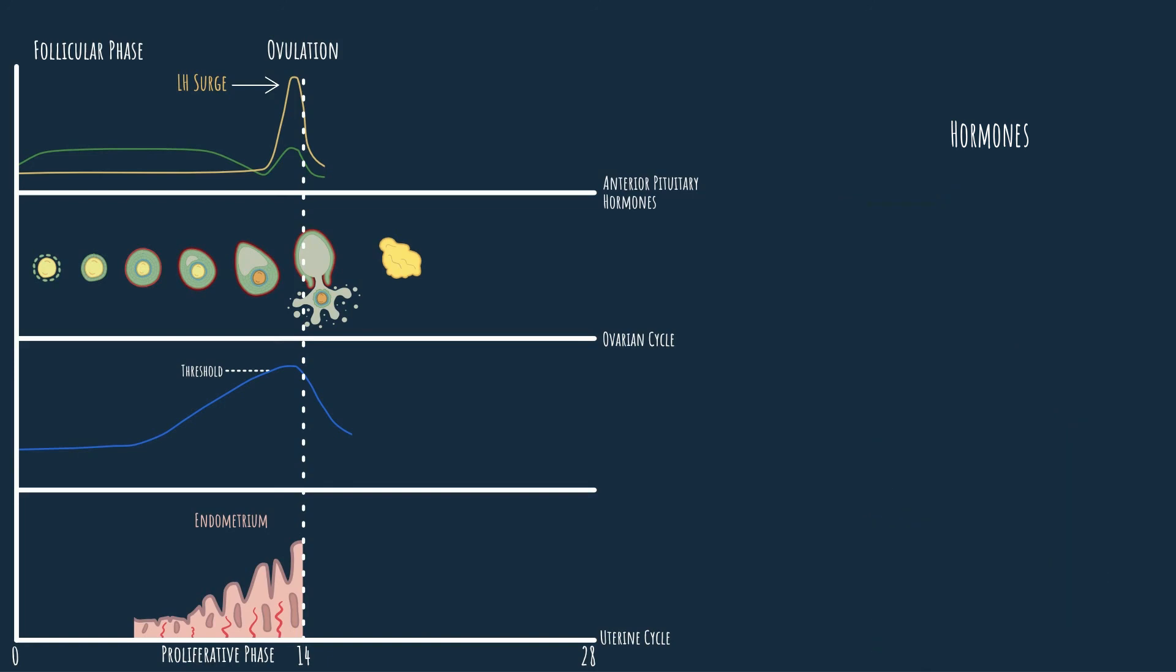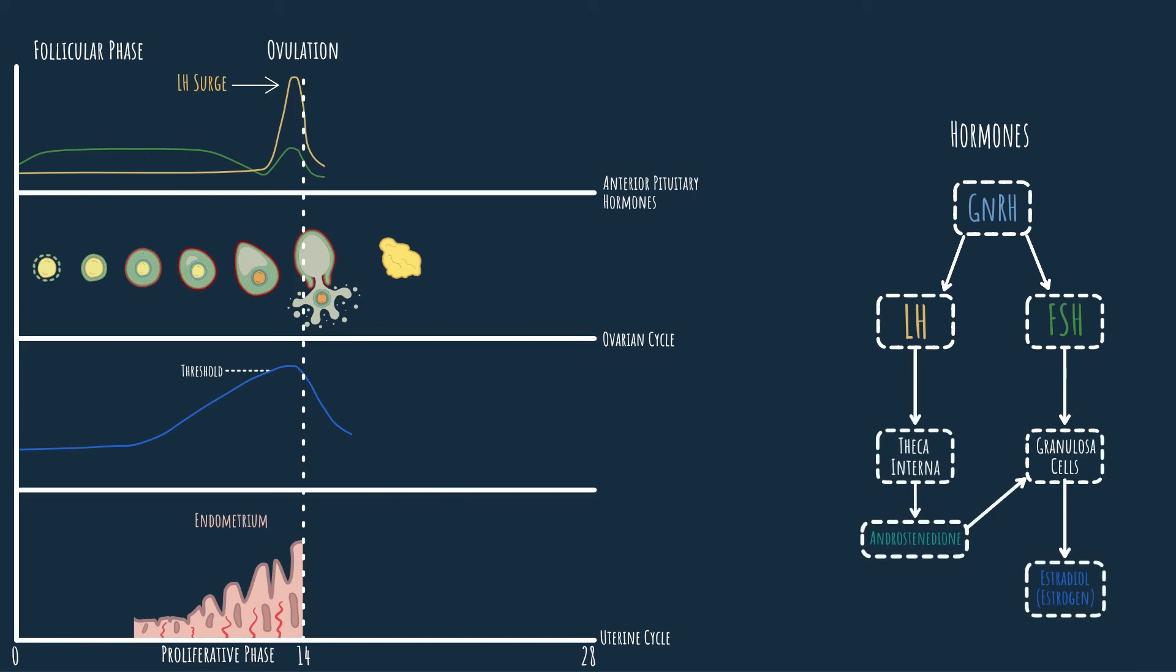We began with GnRH that stimulated the secretion of FSH and LH. FSH in turn stimulated the maturation of a group of follicles. These follicles, under the influence of LH, began to secrete estradiol. Then estradiol caused the endometrium to proliferate and inhibited the secretion of FSH and LH. When estradiol concentration reached a certain threshold, it became a powerful stimulator of FSH and LH secretion. This led to an event called the LH surge, which in turn promoted the maturation of the oocyte, ovulation, and the formation of the corpus luteum.